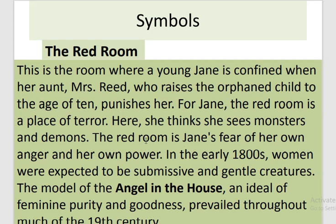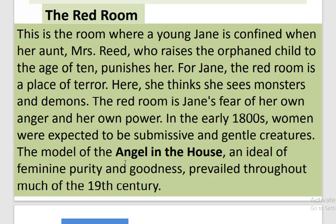Symbols — The Red Room: This is the room where a young Jane is confined and her aunt Mrs. Reed, who raises the orphan child to the age of ten, punishes her. For Jane, the Red Room is a place of terror — here she thinks she sees monsters and demons. The Red Room represents Jane's fear of her own anger and her own power. In the early 1800s, women were expected to be submissive and gentle creatures. The model of the angel in the house — an ideal of feminine purity and goodness — prevailed throughout much of the 19th century.